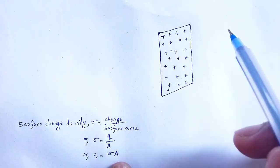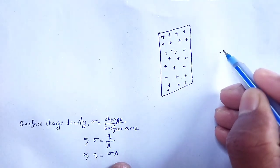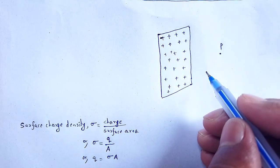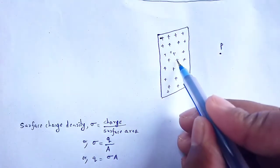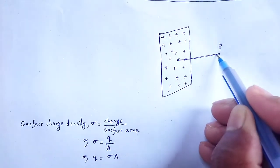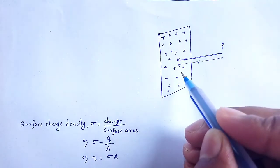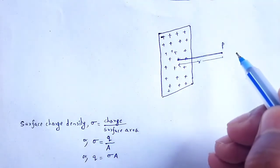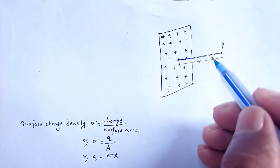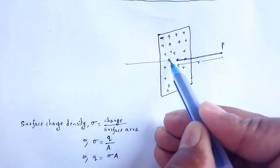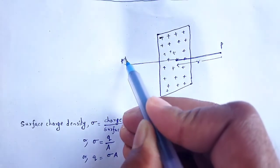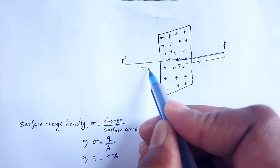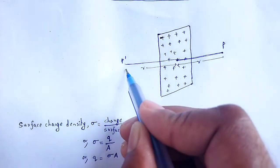Let us calculate the electrical intensity at point P, which is at a distance R from the sheet. Let P dash be another point which is symmetric with P on the other side of the sheet, also placed at a distance R.